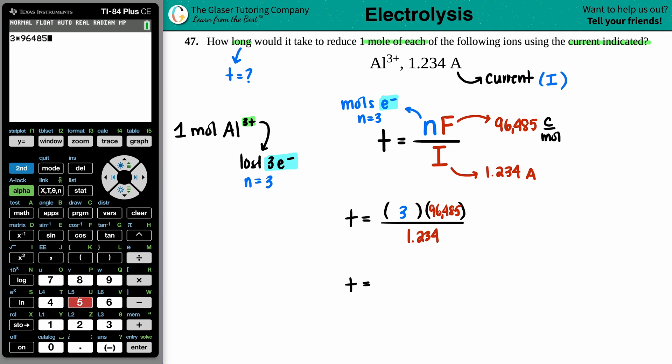96,485. That looks good. Divided by 1.234. And there you go.